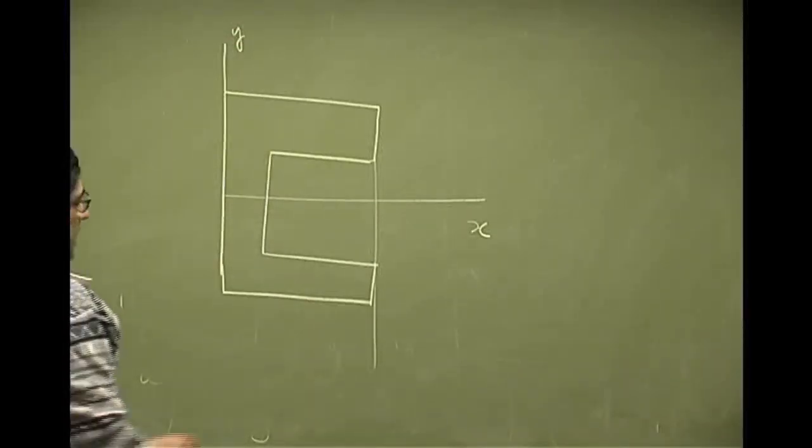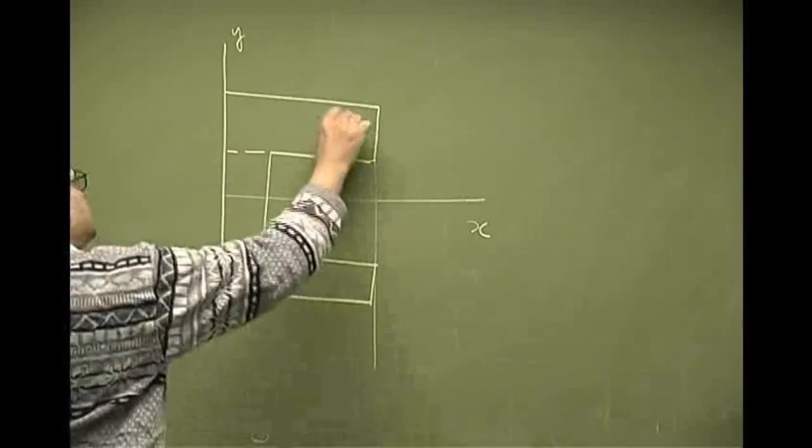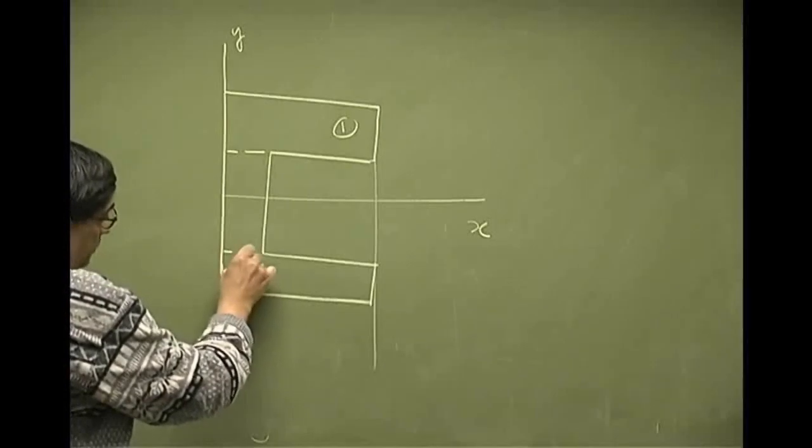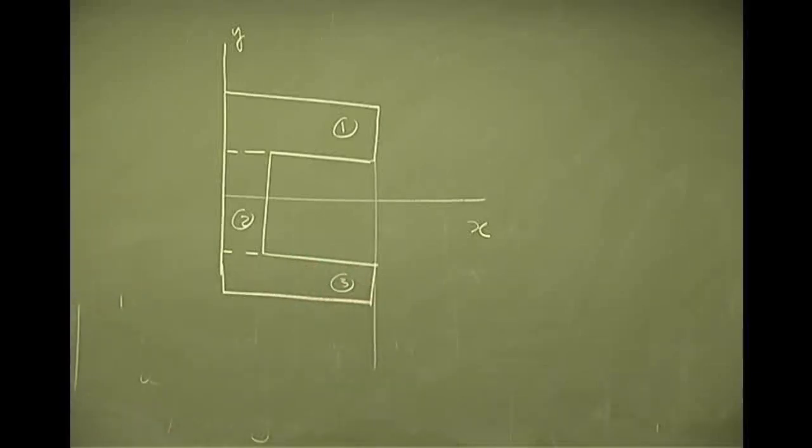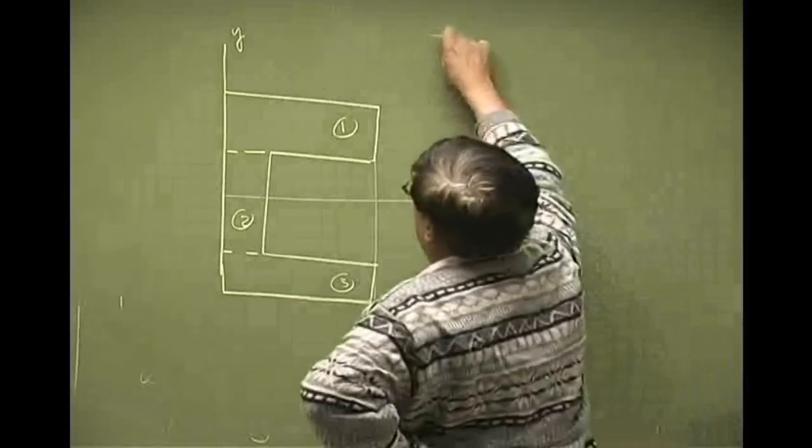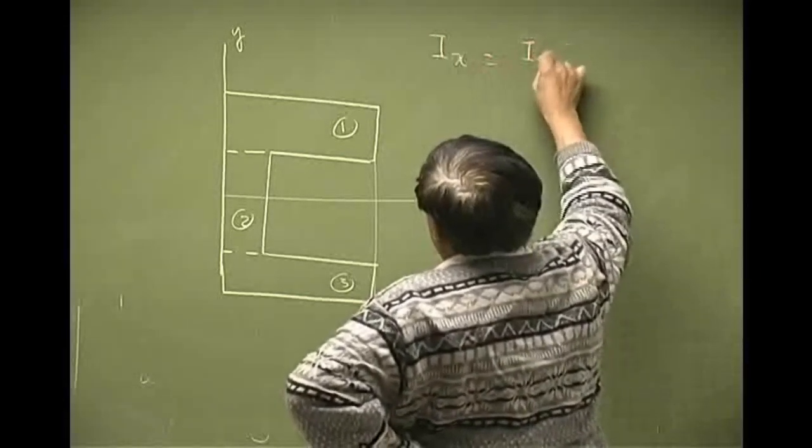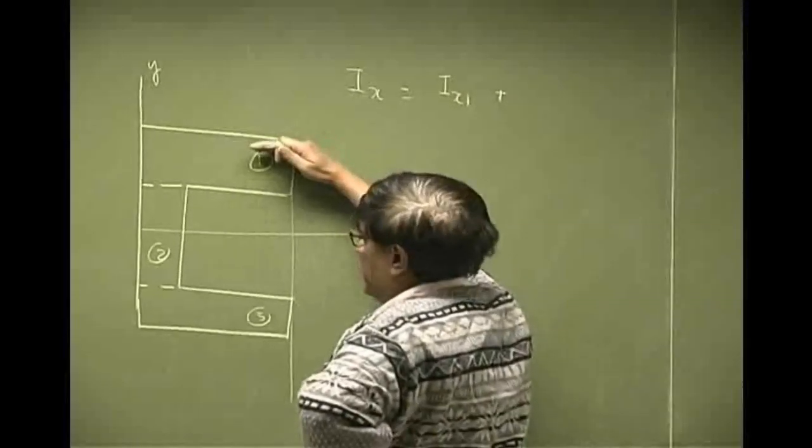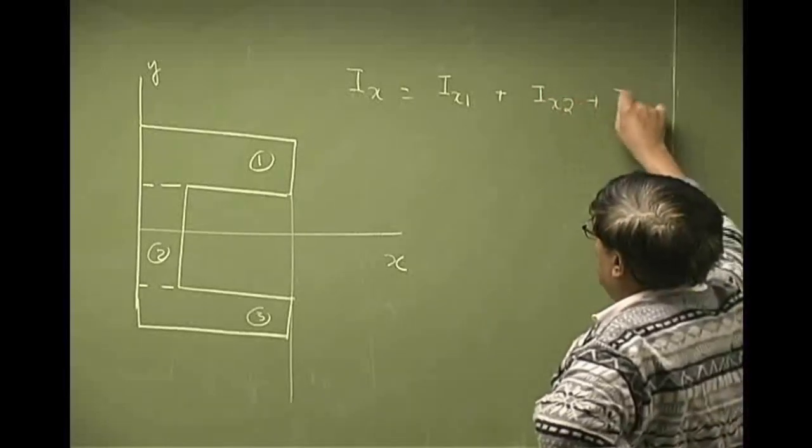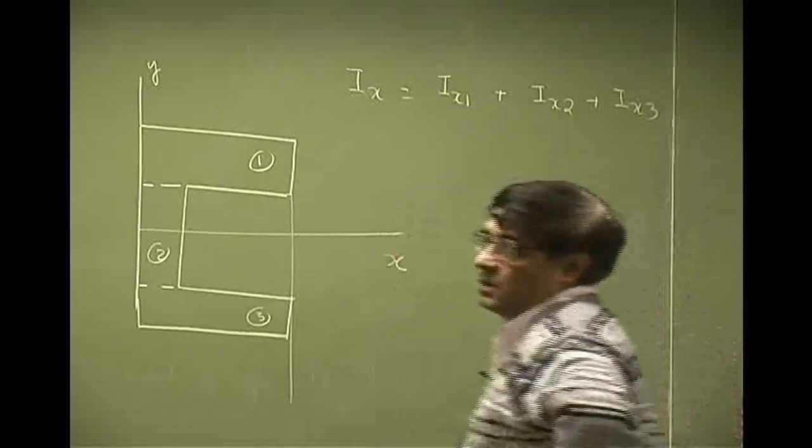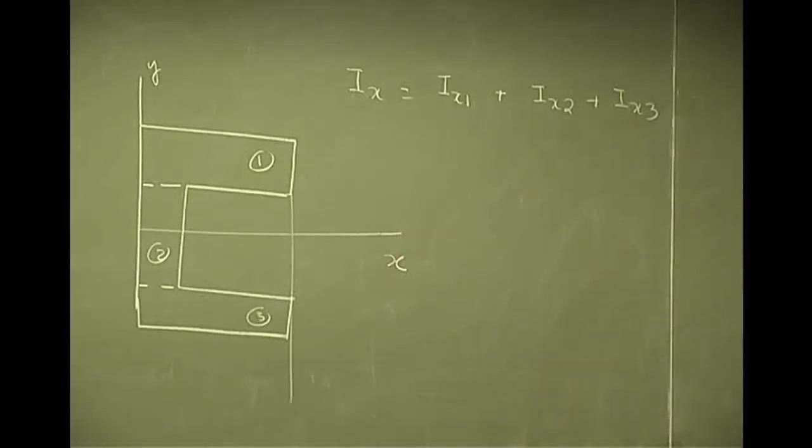What I could do is, I could break this up in three rectangles. You take one rectangle here, let's call this as 1. We take another one here, we call this as 2. We take another one here, we call this as 3. So if you break this up into three of these rectangles, then your i-x will be i-x-1 plus i-x-2 plus i-x-3. We basically add the inertias of each of these rectangles about the x-axis.